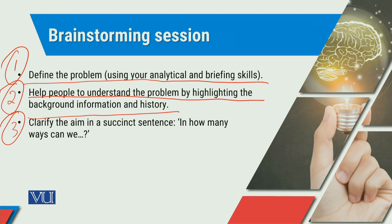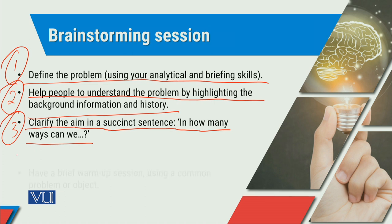The third aspect is clarify the aim in a second sentence. For example, in how many ways we can do something — A, B, C, D. Hum unke tamam tar pehluon ko dekhna chaate hain.